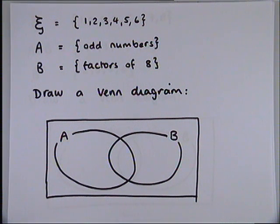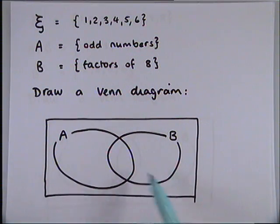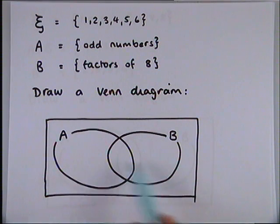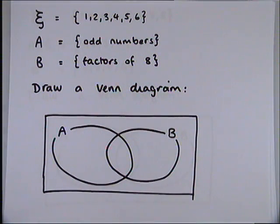In this video we're going to look at set notation for Venn diagrams. Venn diagrams are these diagrams with circles which allow you to categorize different items. They might be numbers, they might be shapes — different things that can go in your Venn diagram and be categorized.